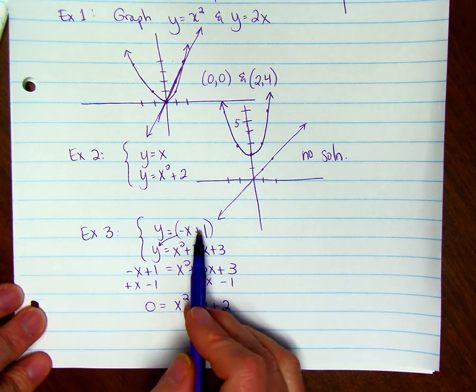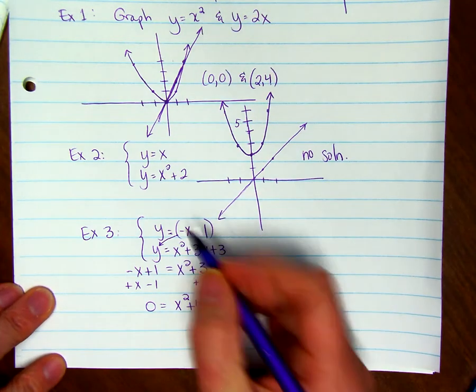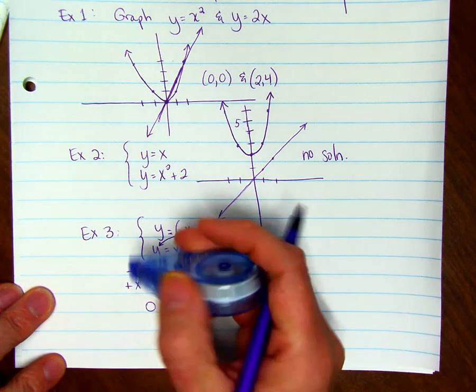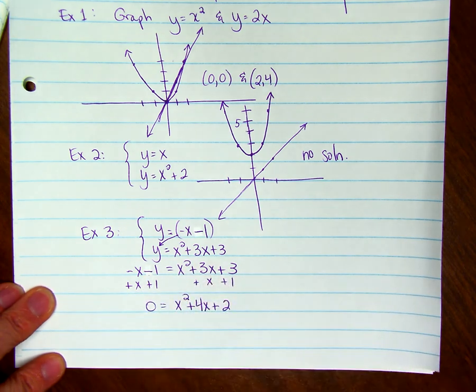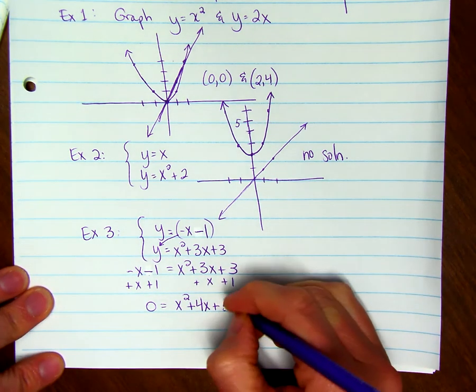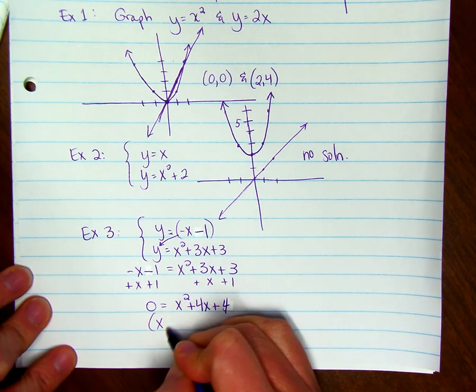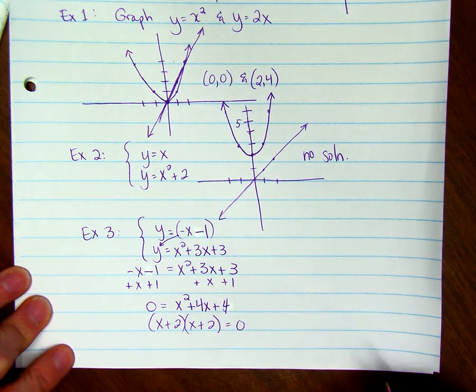Oh wait, that was supposed to be a minus. This is going to work better if this is -1. That way when we add 1 to both sides, this becomes a 4, and now it's a perfect square trinomial, and we can factor it. So we can say (x + 2)(x + 2) = 0.